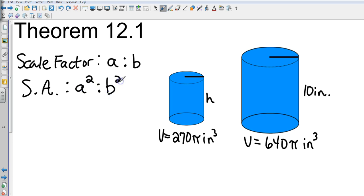We can also find the volume, and that's going to be a³ to b³. So if the scale factor is a to b and they are similar, then your surface area is a² to b², and your volume is a³ to b³.